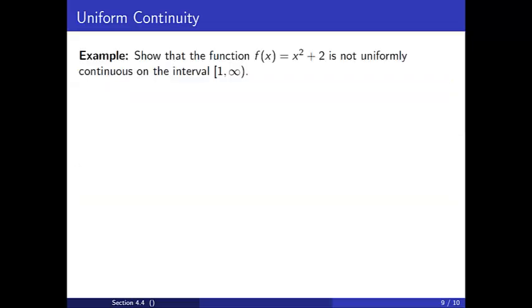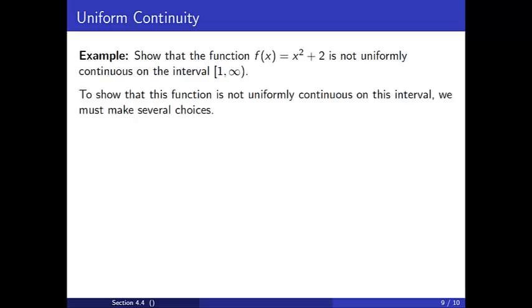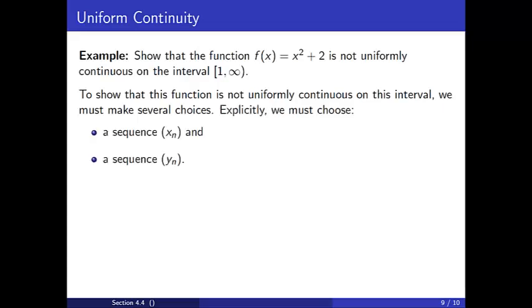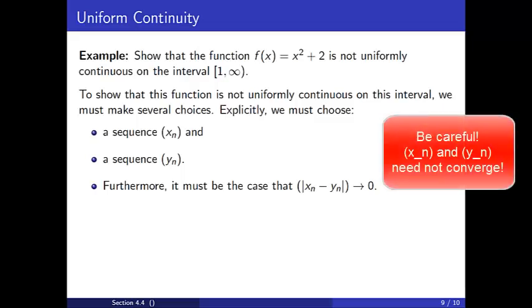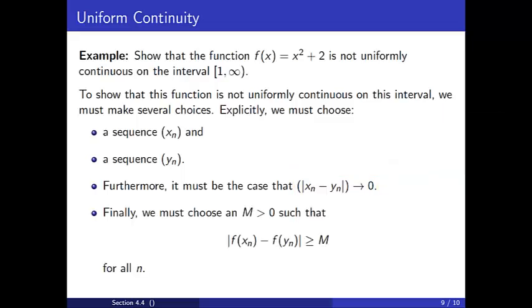For an example, we will show that the function f(x) = x² + 2 is not uniformly continuous on the interval [1, ∞). To show this function is not uniformly continuous, we must choose a sequence x_n and a sequence y_n such that the distance between x_n and y_n converges to 0 as n goes to infinity. Note it is not necessarily the case that both x_n and y_n are convergent sequences — the point is that their difference converges to 0. Finally, we must use a positive real number M such that the distance between f(x_n) and f(y_n) is greater than or equal to M for every n, meaning the corresponding range values are not close to one another.